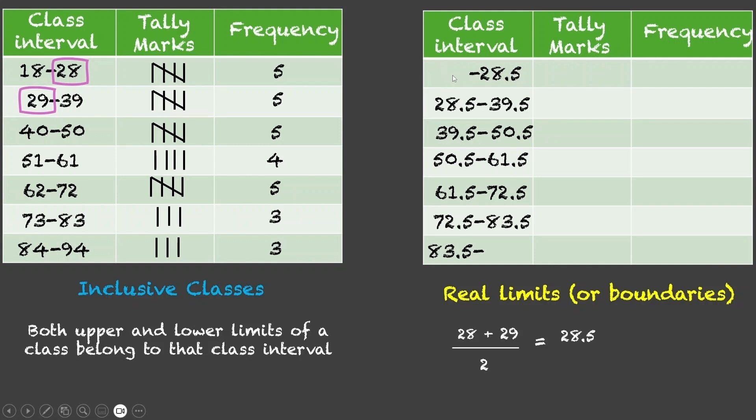Now, for the lower boundary of the first class and the upper boundary of the last class, we just assume one class interval before this, which will have its upper limit as 17. So, average of 17 and 18 would be 17.5. Similarly, the lower limit of this next class, if there was a next class, would have been 95. So, the average of 94 and 95 would be 94.5 and that's how we find out these real limits or boundaries.